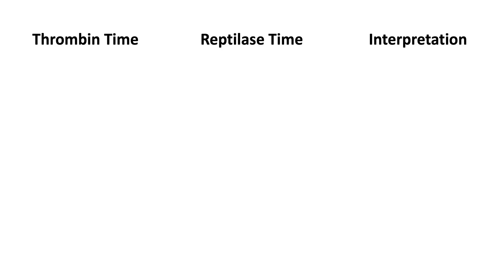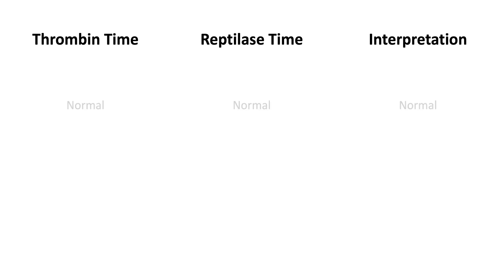The reptilase time is typically used to help interpret a prolonged thrombin time. When the thrombin time is normal, the reptilase time will also be normal, indicating that there is no inhibitor of thrombin, dysfibrinogenemia, or interference of fibrin polymerization. When the thrombin time is prolonged but the reptilase time is normal, it indicates that heparin or other direct thrombin inhibitor is present.